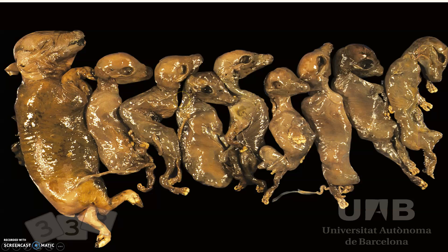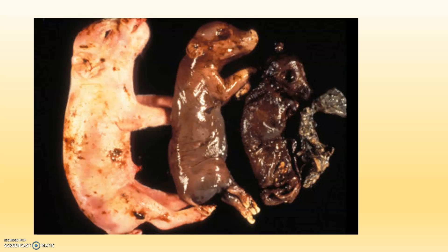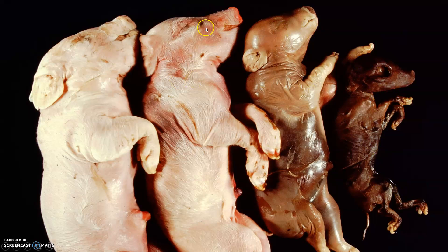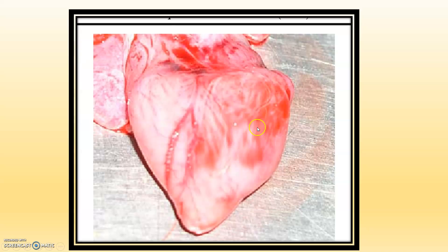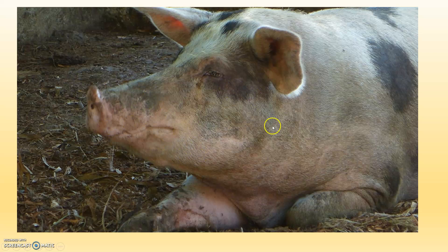This image shows hemorrhage present in the heart of the dam. Whenever you are doing the post-mortem, you can see many ecchymotic or petechial hemorrhages on the heart surface and pericardium. This is an affected pig dam, and sinuses of the ears, sinuses of the snout region and eye region can be present.